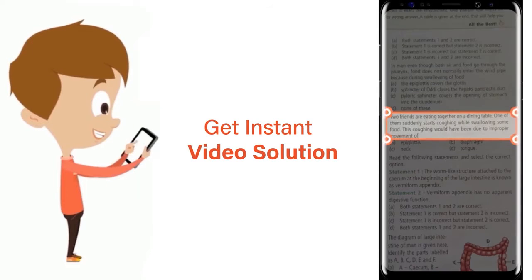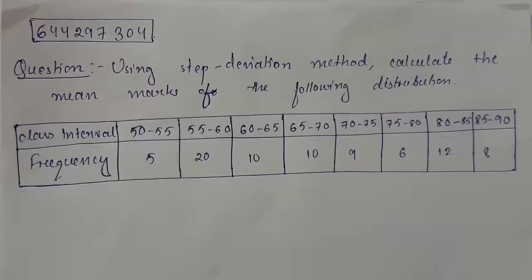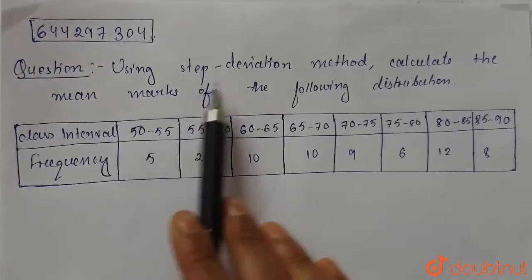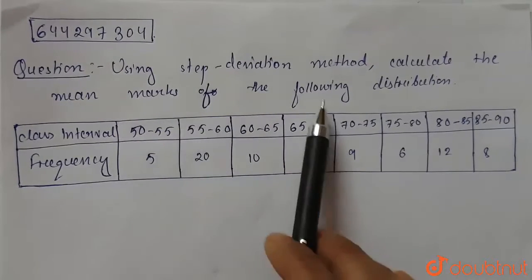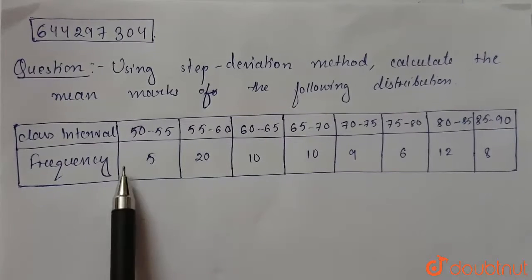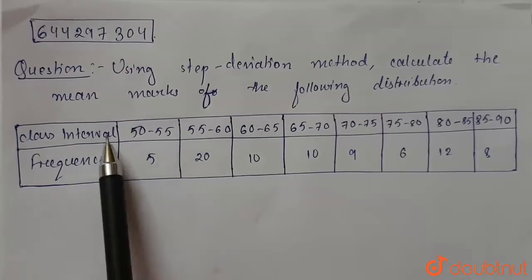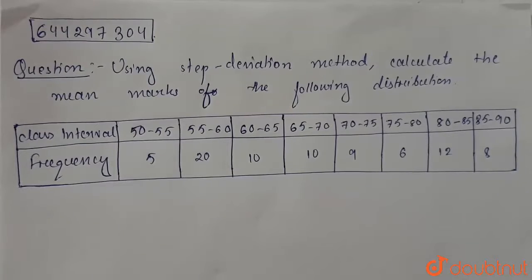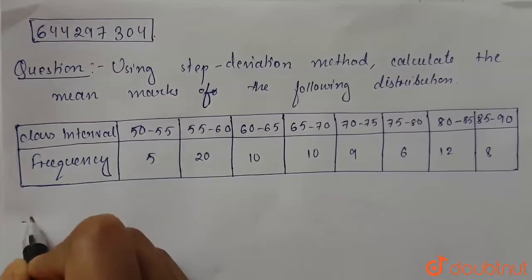Today our question is: using the step deviation method, calculate the mean marks of the following distribution. A distribution table is given where we have class interval and frequency. Let's start with the solution by first drawing out the required table.